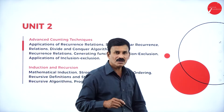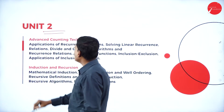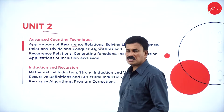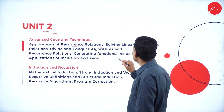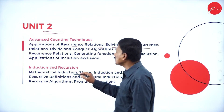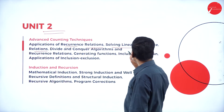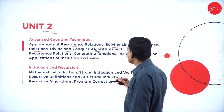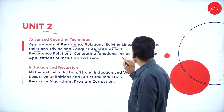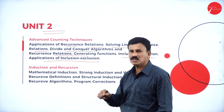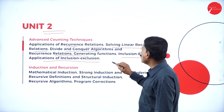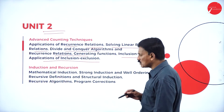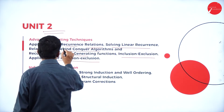Now let us come to the second unit, which also carries 20 marks — the advanced counting techniques. This covers the application and advantages of recurrence relations, solving linear recurrence relations and linear inequalities, divide and conquer algorithms, the division algorithm, generating functions, and inclusion-exclusion along with its applications. The main concepts are the division algorithm and inclusion-exclusion and their applications in recurrence relations.